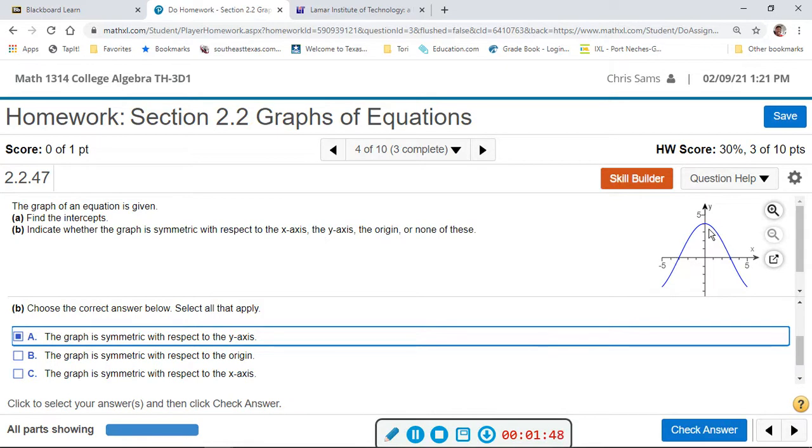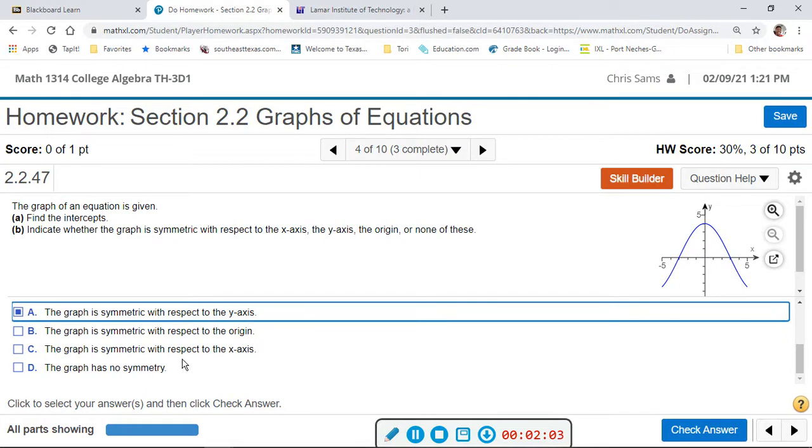Now, if I were to take this, let's just focus on this section here. If I flip it over the y-axis, but if I flip it down, that would be origin, and it's not there. This same shape is not here. So it only has y-axis symmetry, and we already did the intercepts.